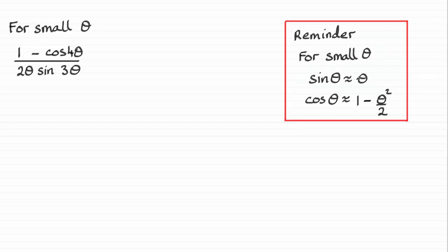sine theta is approximately the same as theta and cosine theta is approximately the same as 1 minus theta squared all over 2.